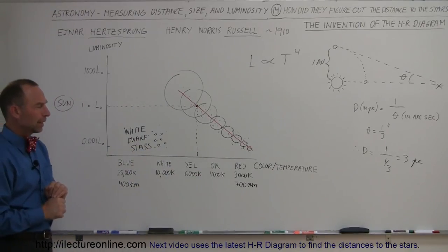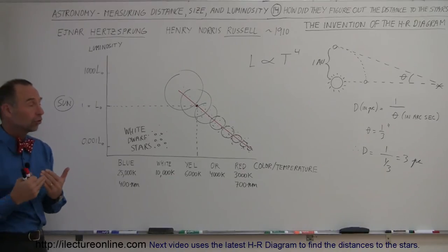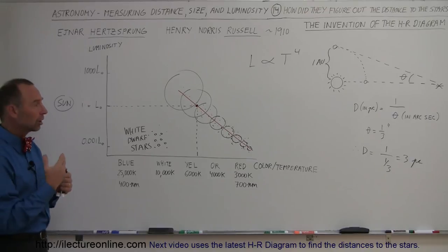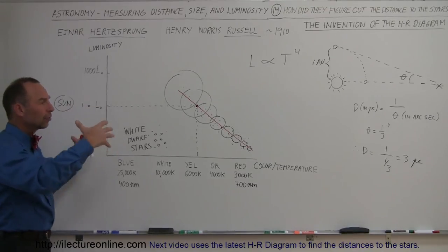So what did that imply? This had a tremendous impact in our ability to determine the distance to stars. Why is that?